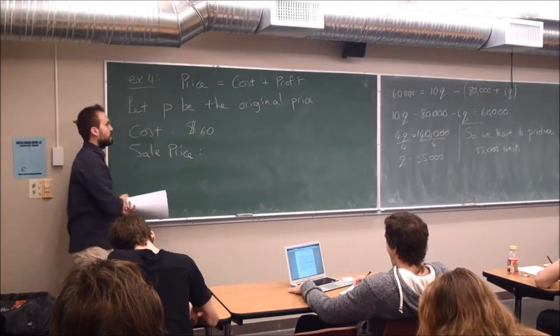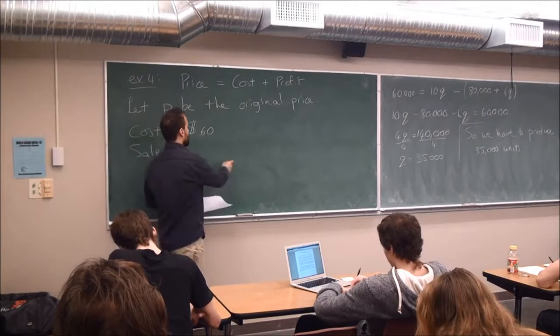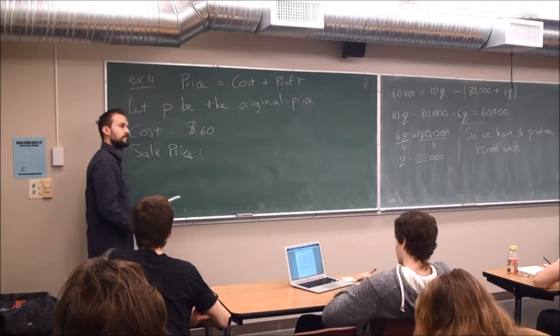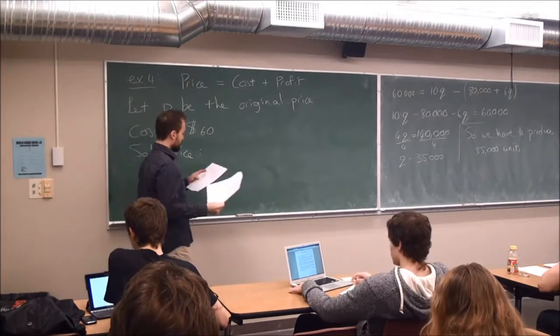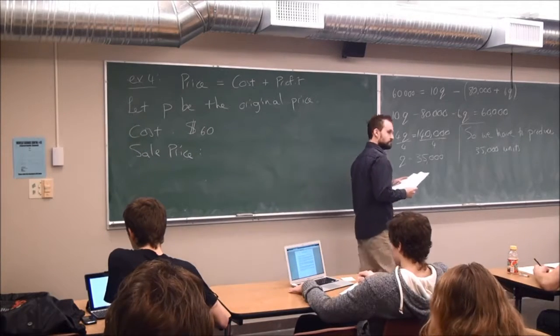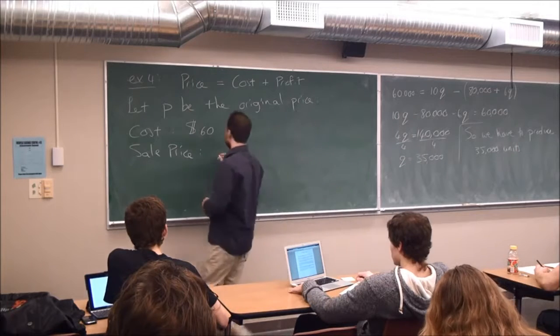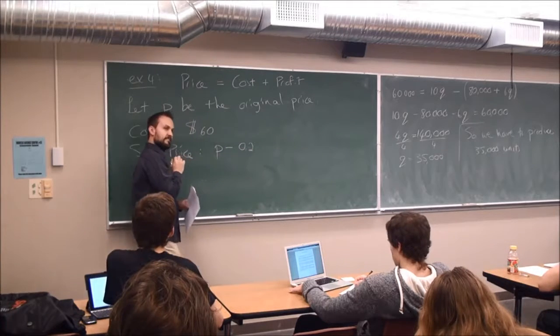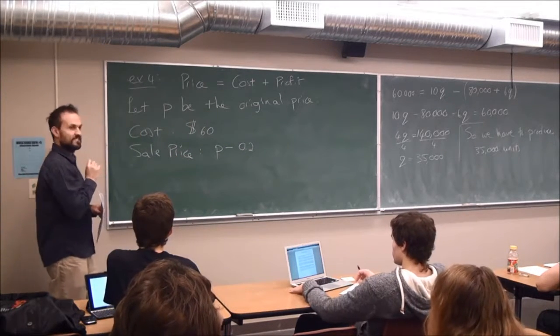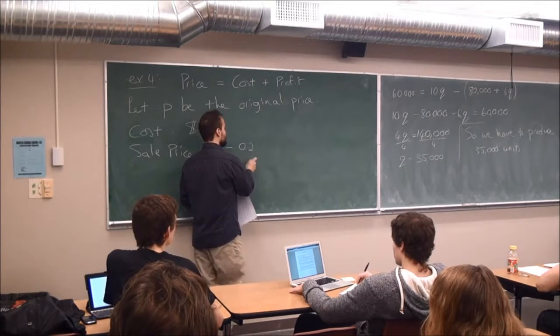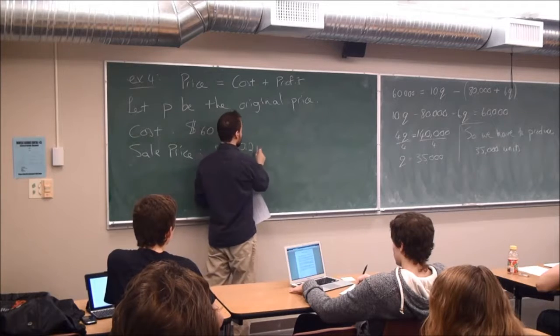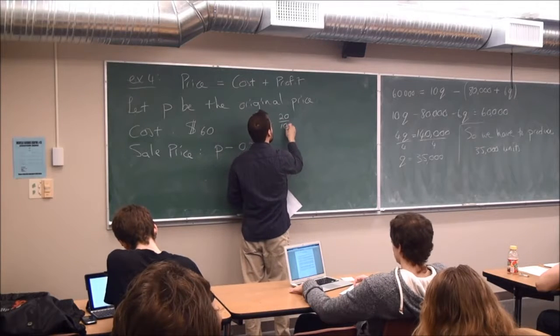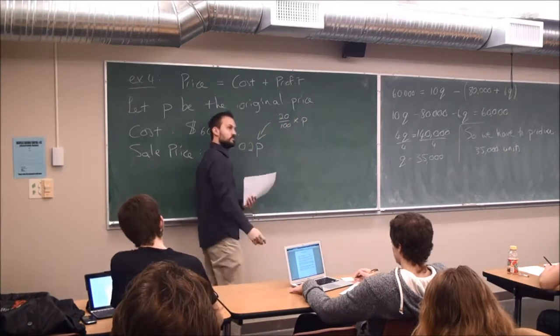If I have a sale where I reduce the price by 20%, what is the expression using P for the new price? I would say this is the most important question of all of these. P minus 0.20. All right. P minus 0.20. Just like that? You're missing a little bit. 20% of the price. You can also write 20 over 100 times P. 20% of P.